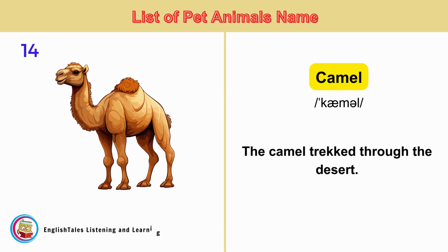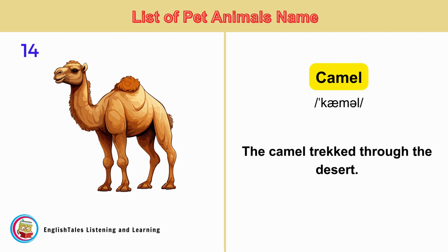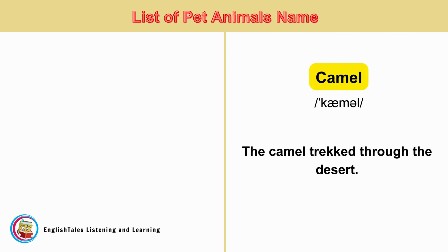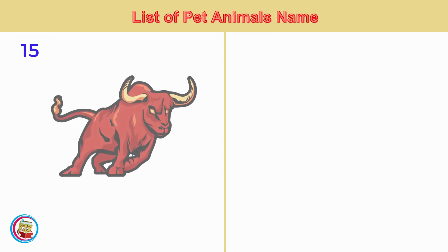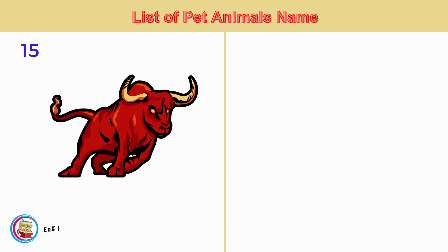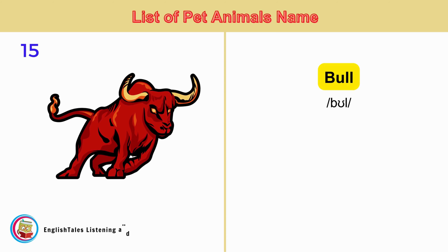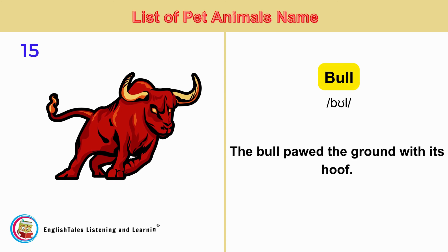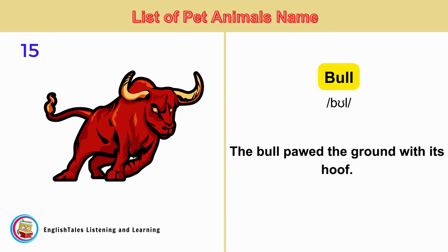Camel. The camel trekked through the desert. Bull. The bull pawed the ground with its hoof.